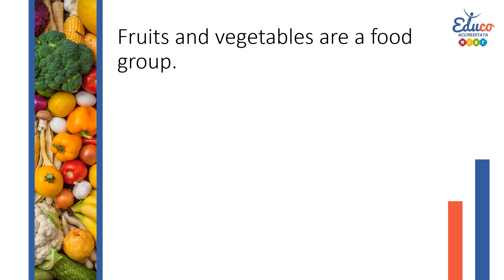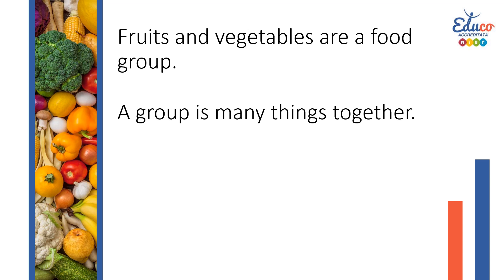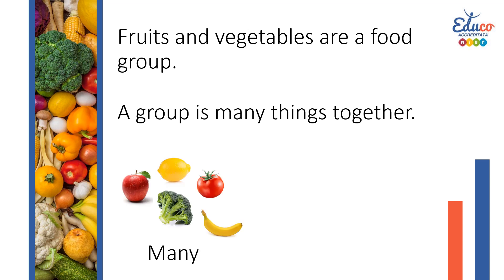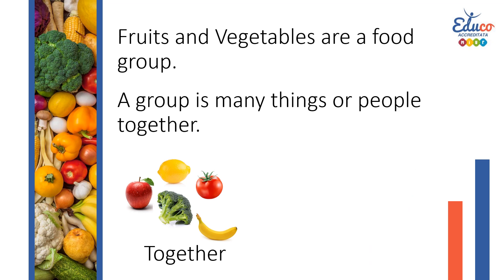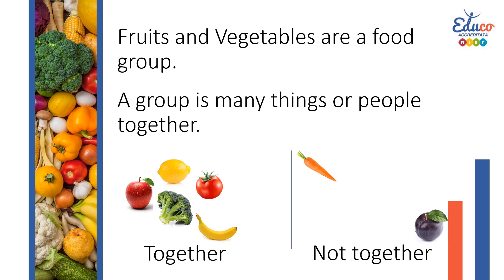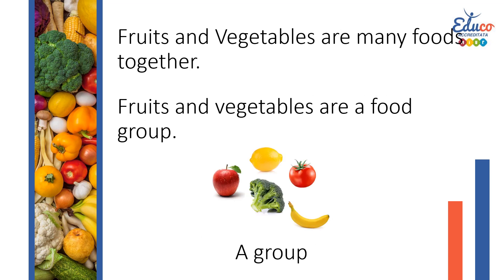Fruits and vegetables are a food group. Can everyone repeat: food group. A group is many things together. Can everyone repeat: many. Can everyone repeat: few. Can everyone repeat: together. Not together. Can everyone repeat: not together. Fruits and vegetables are many foods together. Fruits and vegetables are a food group.